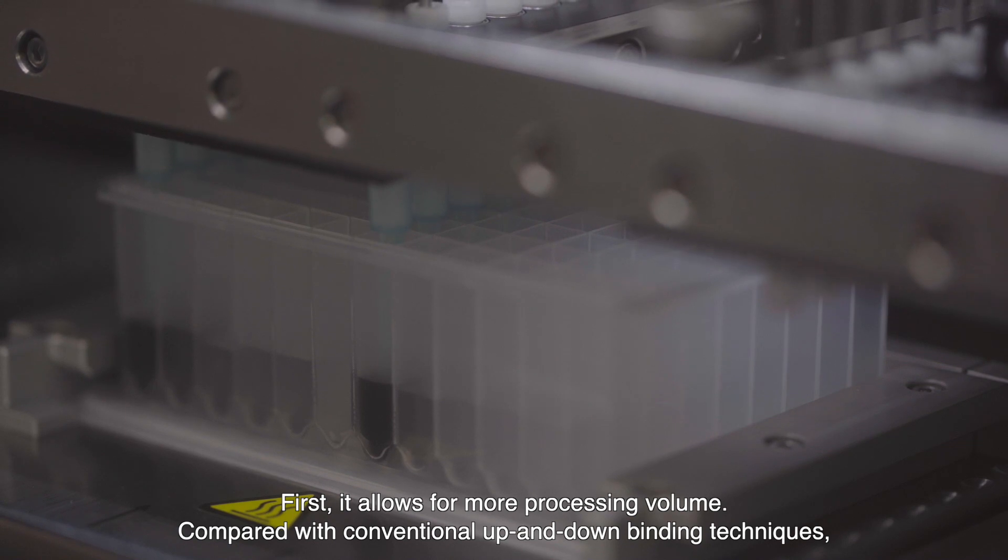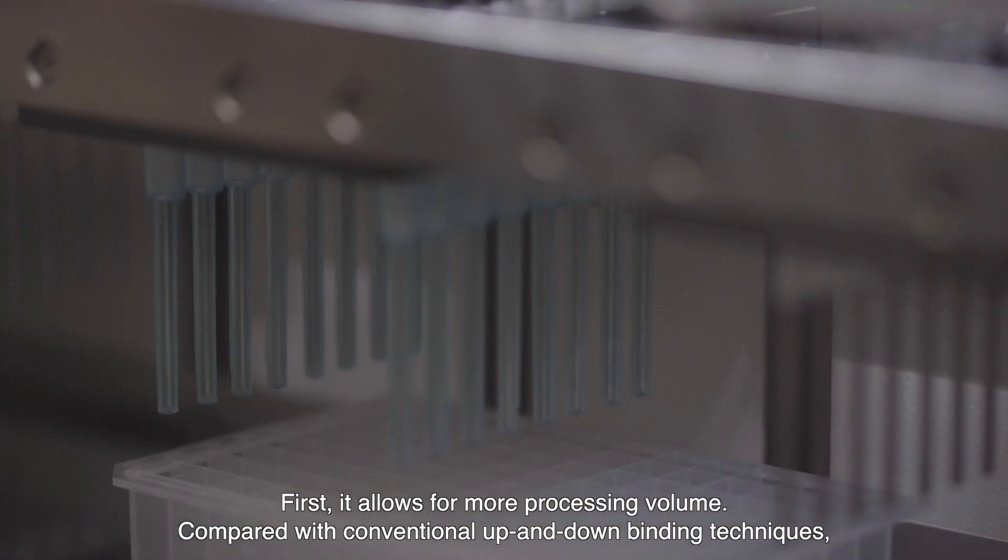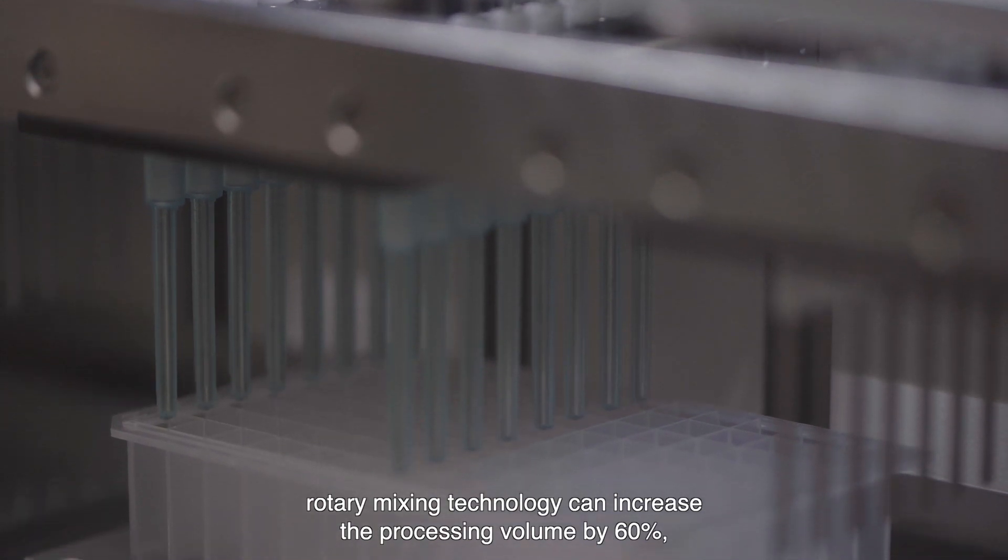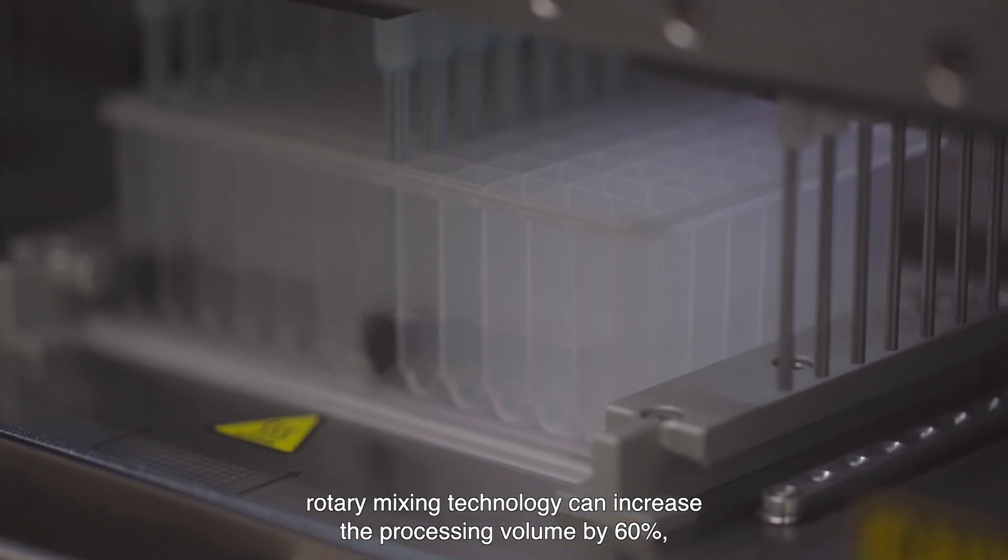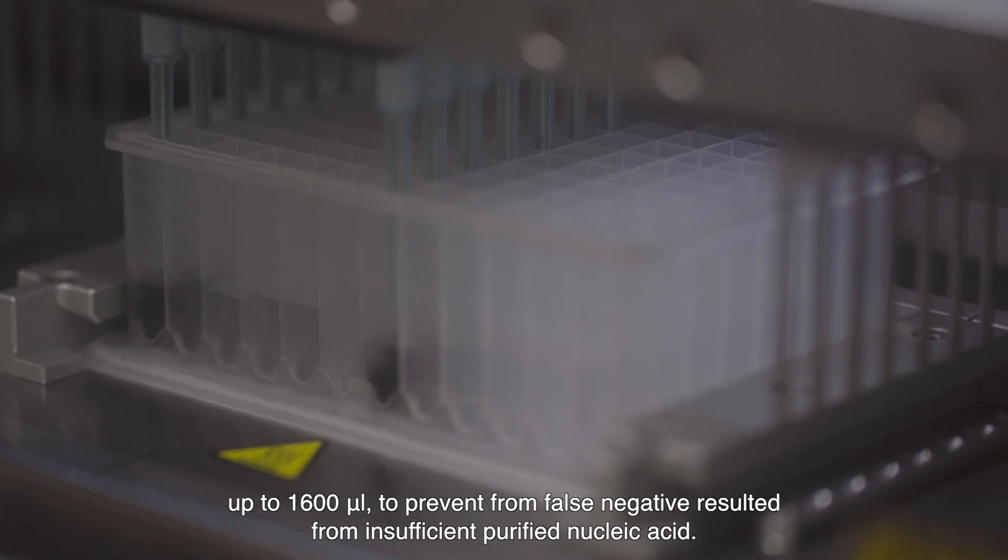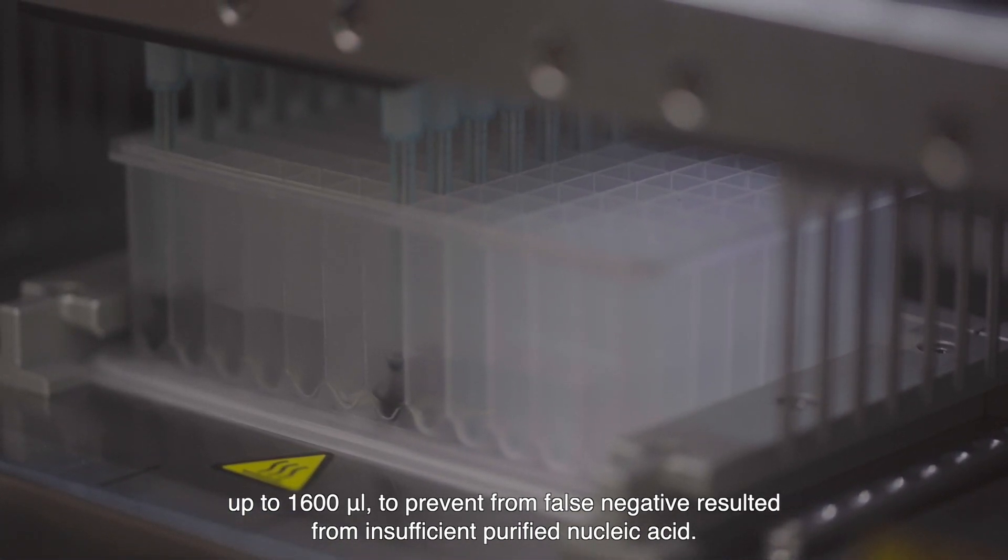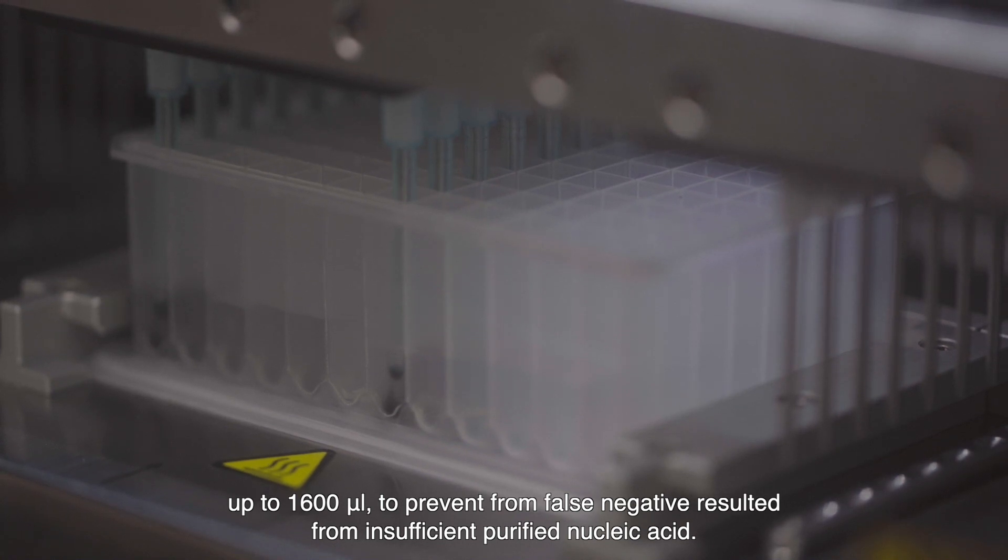First, it allows for more processing volume. Compared with conventional up and down binding techniques, rotary mixing technology can increase the processing volume by 60 percent, up to 1600 microliters, to prevent false negatives resulted from insufficient purified nucleic acid.